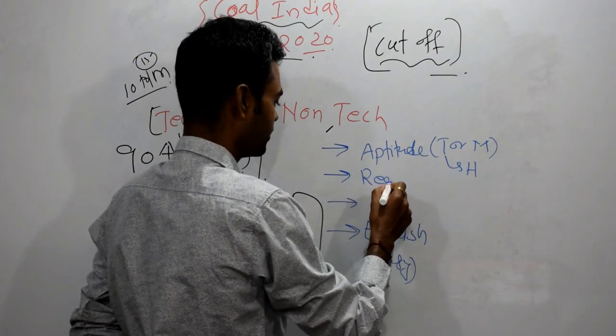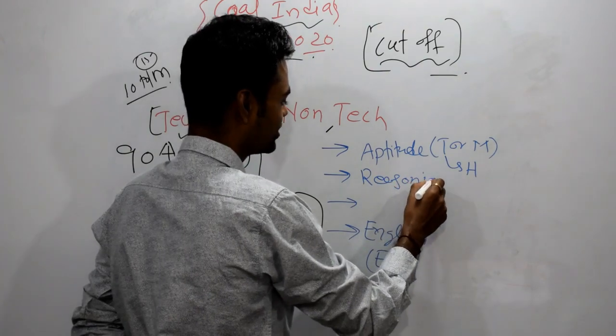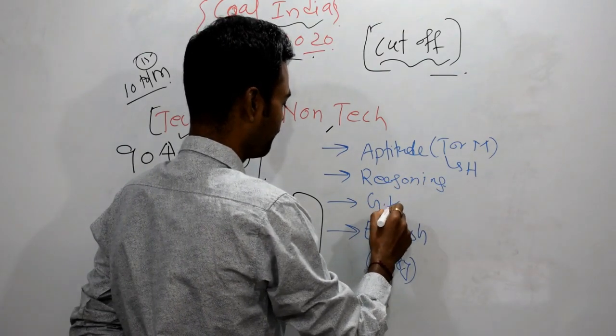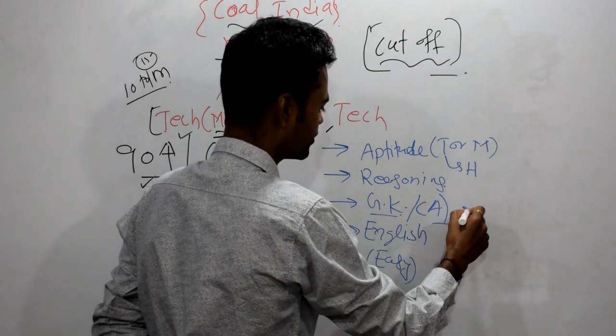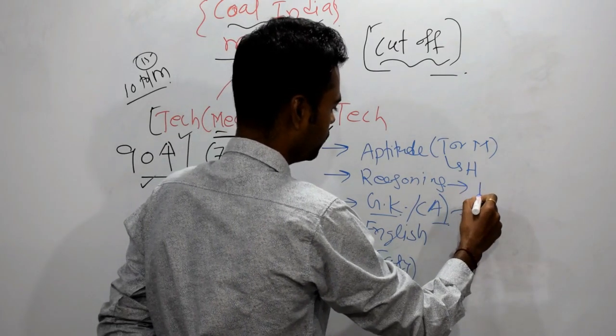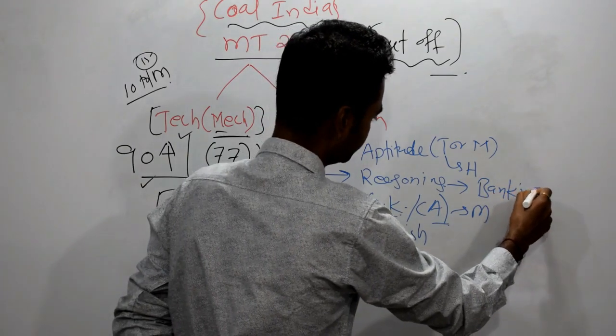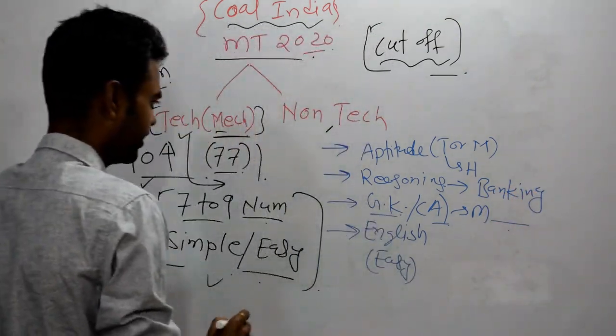Reasoning, as well as GK or current affairs, everybody saying GK is also moderate level. Reasoning, it was like banking type.